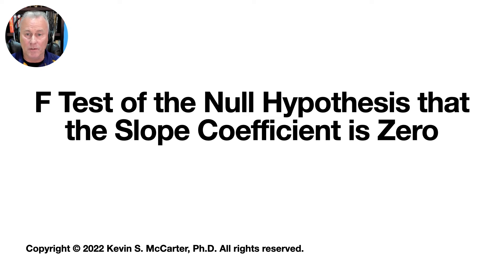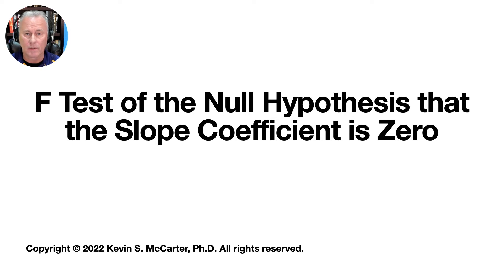We've defined the mean squares associated with the partition of the total sum of squares of the response and found the expected values of those mean squares. In this lecture, we'll see how to use those mean squares to develop a hypothesis test for the slope of the simple linear regression model.